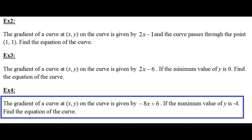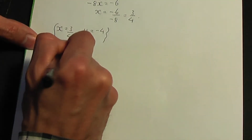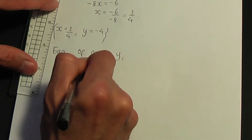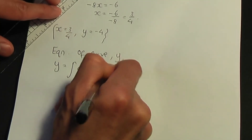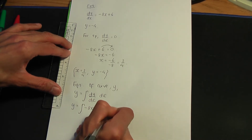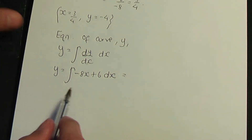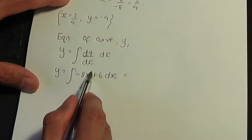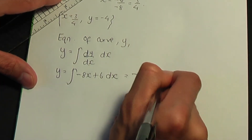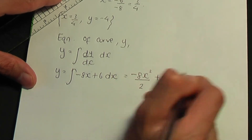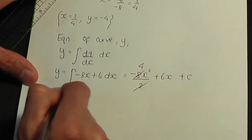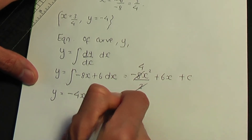To find the equation of the curve, integrate dy over dx with respect to x. dy over dx is minus 8x plus 6. Integrating minus 8x: add 1 to the power to get 2, giving minus 8x squared divided by 2. Integrating plus 6 gives plus 6x, plus constant c. Cancelling 2 into 8 gives 4, so y equals minus 4x squared plus 6x plus c.